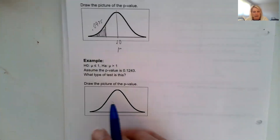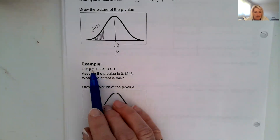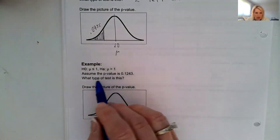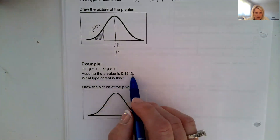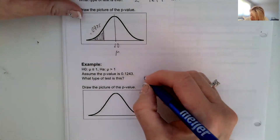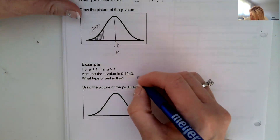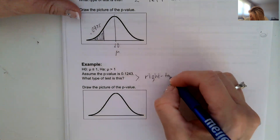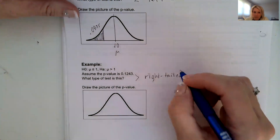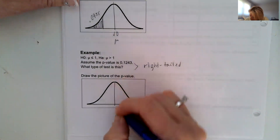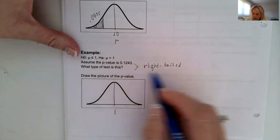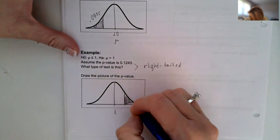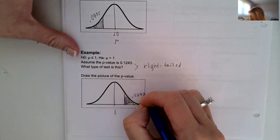The next example says H0 is equal to 1 and HA is greater than 1. Assume the p-value is 0.1243. What type of test is this? This is a right-tailed test because it's a greater than. The mean we draw is 1, and the p-value is going to be on the right because it's right-tailed. The p-value would be 0.1243.